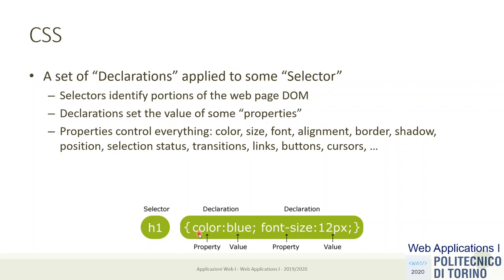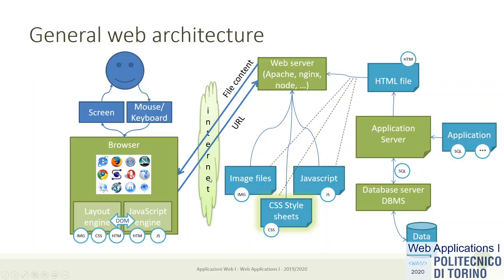We can give a value to each of these properties. In this case we are saying that all first-level titles will be blue and have a font size of 12 pixels. This rule is combined with all the other rules defined in the style sheets, and at the end we are customizing the appearance of every element in the DOM. From the architectural point of view, CSS style sheets are just one textual resource we define on the server and get interpreted by the layout engine.